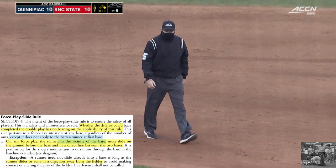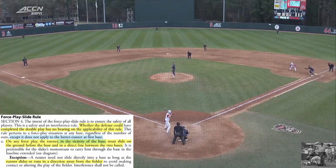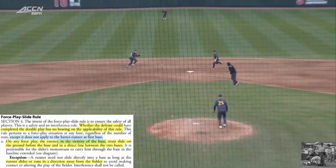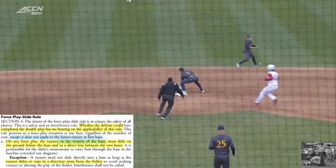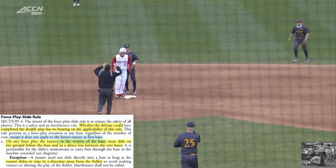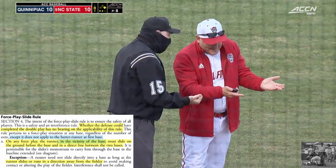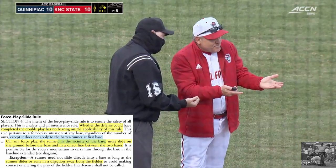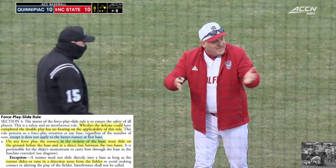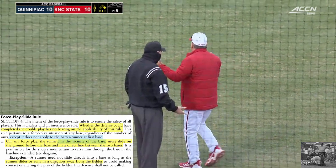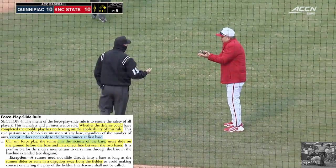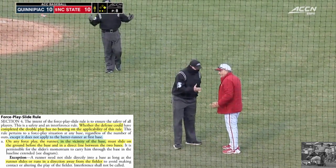NCAA Rule 8-4, the Force Play Slide Rule, states that whether the defense could have completed the double play has no bearing on the applicability of this rule. On any force play, the runner in the vicinity of the base must slide on the ground before the base and in a direct line between the two bases.